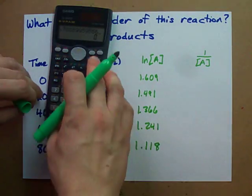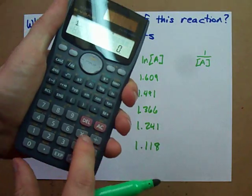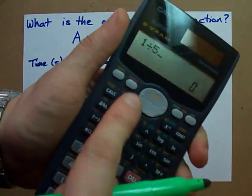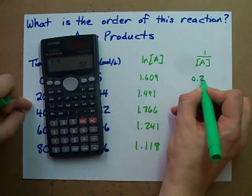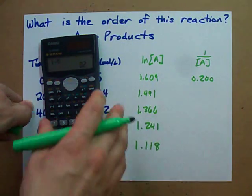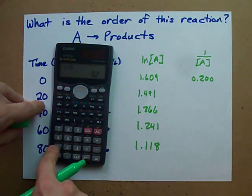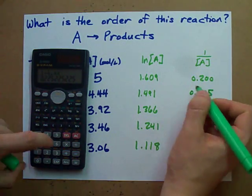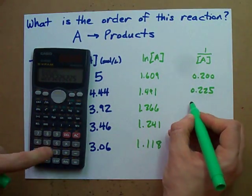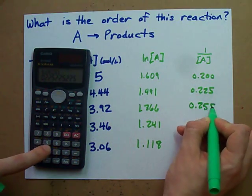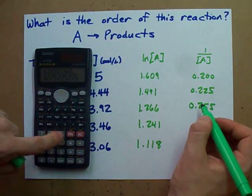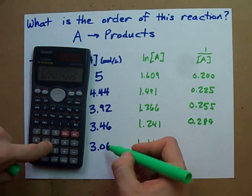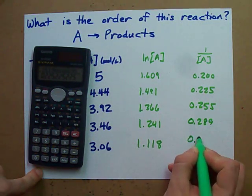In the second column, calculate 1 divided by whatever is in the reactant concentration column. So 1/5 = 0.200. Then 1/4.44 = 0.225. 1/3.92 gives the next value. 1/3.46 = 0.289. And 1/3.06 = 0.327.